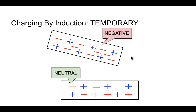So we're going to figure out why these two objects are attracted to each other when only one is charged — this negatively charged object — and why this neutral one would even want to be attracted to the negatively charged object. So let's take a look.